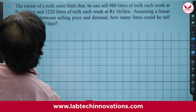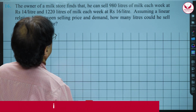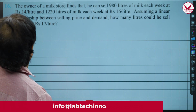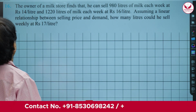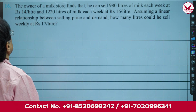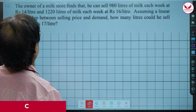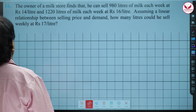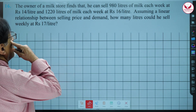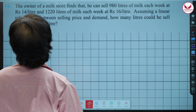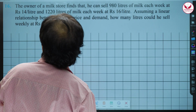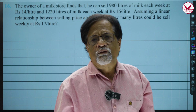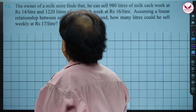The owner of a milk store finds that he can sell 980 litres of milk each week at rupees 14 per litre, and 1220 litres of milk each week at rupees 16 per litre. Assuming a linear relationship between the selling price and demand, how many litres could he sell weekly at rupees 17 per litre?